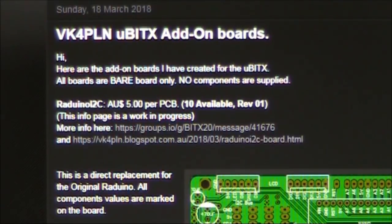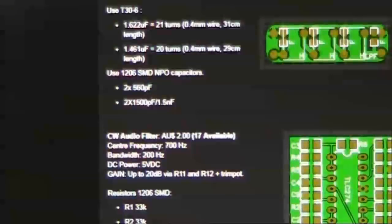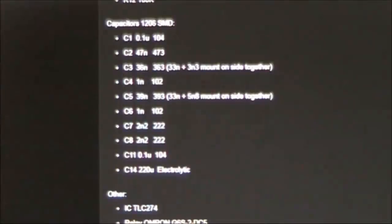The boards cost between $1 and $5 each, pretty much at cost. For more information on the boards by VK4PLN, go to vk4pln.blogspot.com. There's a description of what each of the boards does, the component values, and ordering information.